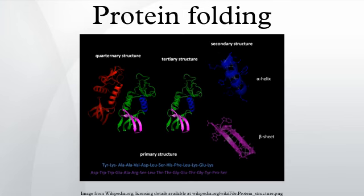The process of folding often begins co-translationally, so that the N-terminus of the protein begins to fold while the C-terminal portion of the protein is still being synthesized by the ribosome. Specialized proteins called chaperones assist in the folding of other proteins. A well-studied example is the bacterial GroEL system, which assists in the folding of globular proteins.